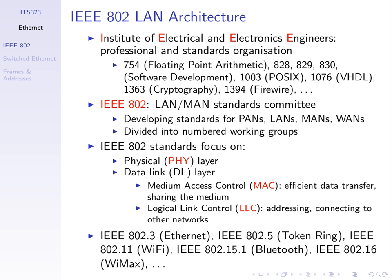They give their standards a number. A very widely used range of standards is those regarding local area networks and originally metropolitan area networks. They have a committee, and the number associated with that is 802 — IEEE 802. That's what we care about in data communications, and they develop standards for personal, local, metropolitan area, and even more recently, wide area networks.